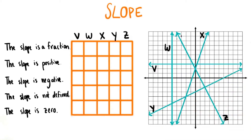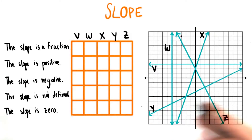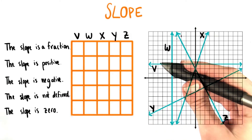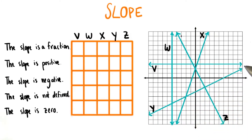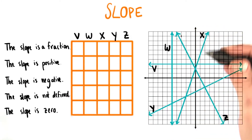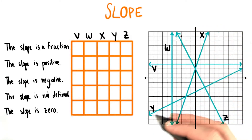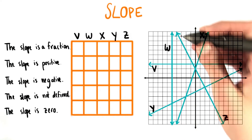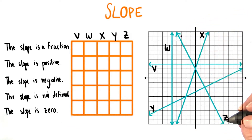Here are a bunch of lines that I've drawn on one coordinate plane. You'll notice that I've labeled each of these lines with a name. We have V, W, X, Y, and Z.